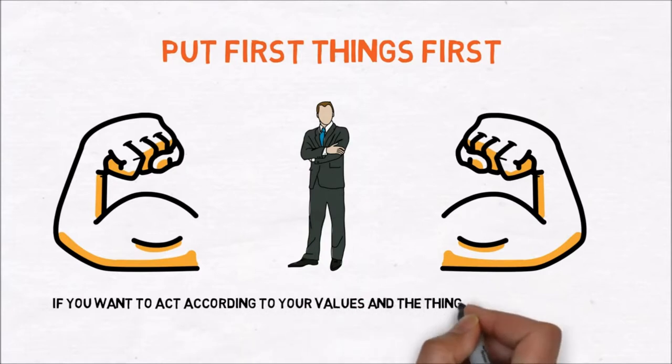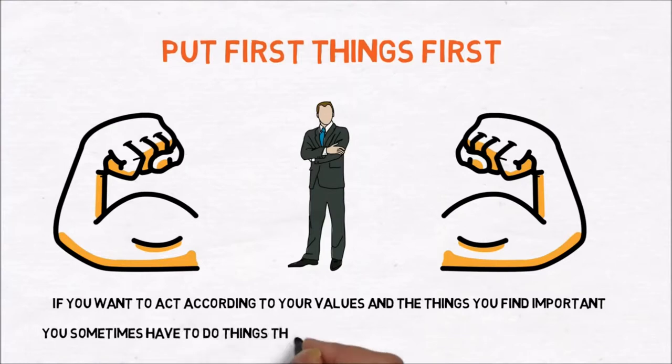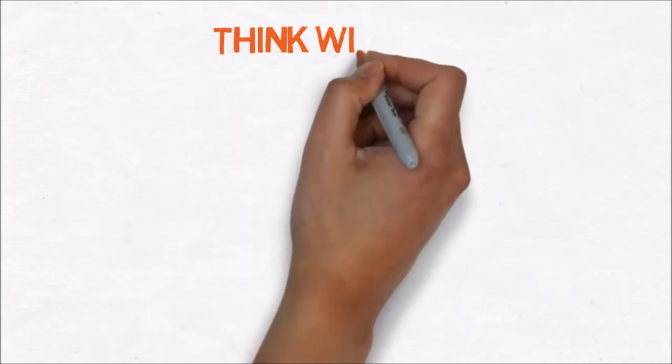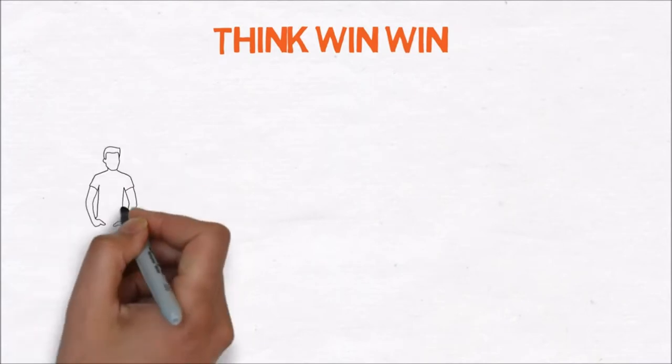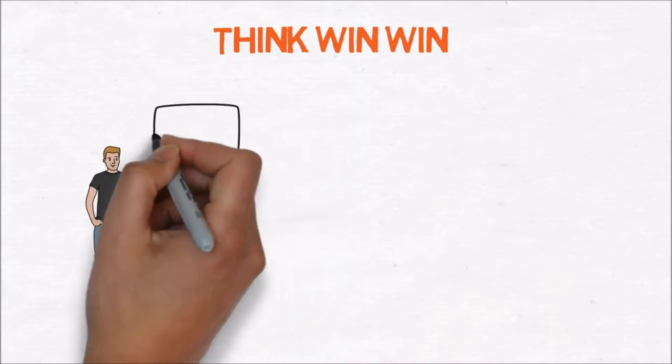However, if you want to act according to your values and the things you find important, you sometimes have to do things that will eventually help you reach your goals. The fourth lesson is to think win-win. Most people think in a win-lose situation, if I win you lose. Only one person gets what he or she wants for the moment.